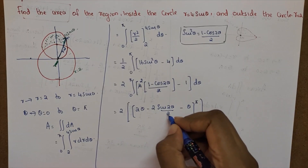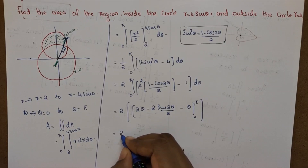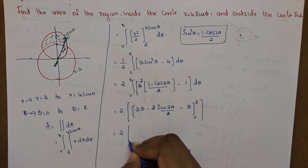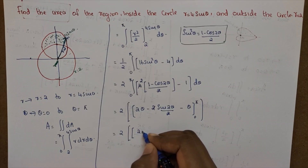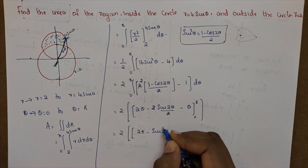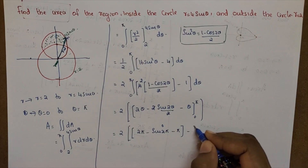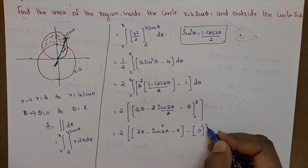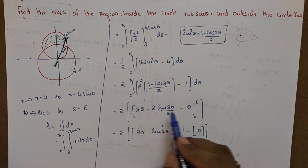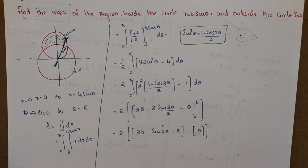This is equal to 2 into the limit. The upper limit gives 2 pi minus sin 2 pi, sin 2 pi is 0. Minus the lower limit: 0, sin 0 is 0. So 2 pi minus pi is equal to pi, and the answer is 2 pi.